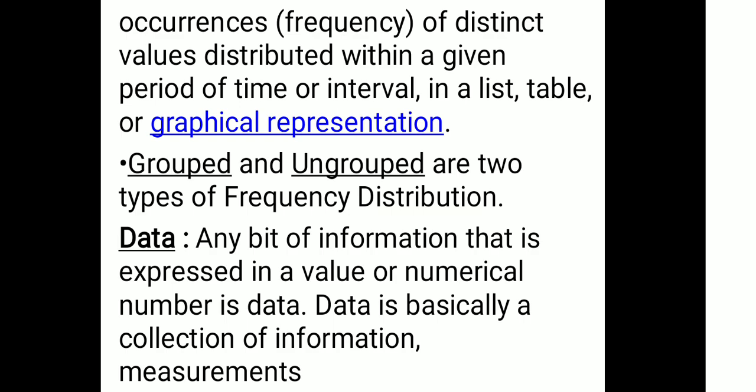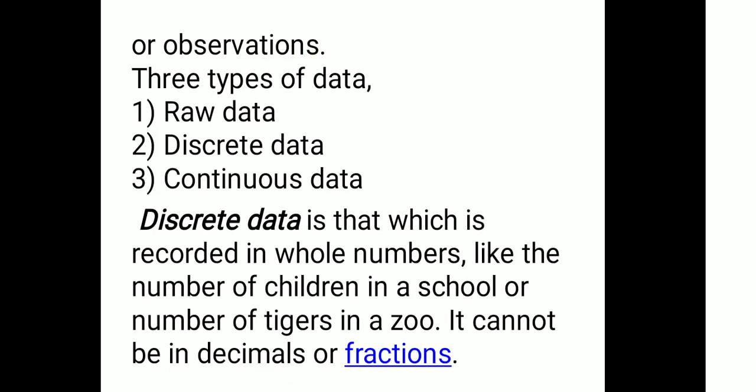Okay, then data. Data: any bit of information that is expressed in a value or numerical number is data. Data is basically a collection of information, measurement, or observation. There are three types of data: first, raw data; second, discrete data; third, continuous data.